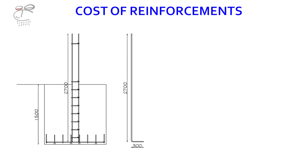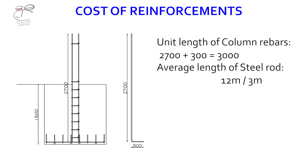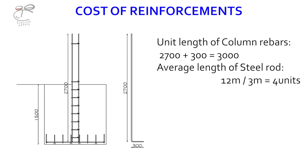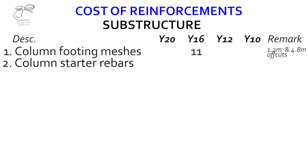The column starter rebars have four units of rebars, and what determines the length is the depth of the foundation trench and the height of the side concrete — measurements usually specified in the structural drawing. We add 2.7 plus 0.3 meters, giving 3 meters as the unit length of the column rebars. The average length of a steel rod is 12 meters; dividing 12 by 3 gives four units per length. With four column footings, four columns require four lengths of steel rod, which we enter under Y20 on the list.